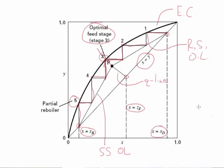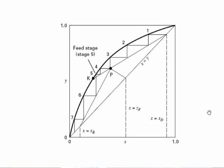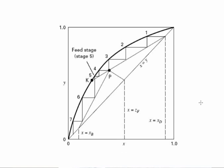This isn't the only way we could arrange that. It would be possible to imagine placing the feed stage elsewhere. In this diagram, we see the same McCabe-Thiele plot, but now the feed stage has been placed on stage five. The feed stage is still merely when we transition from one operating line to the other. Here we continue stepping along the rectifying section operating line until we get to stage five, where we've gone from the rectifying section operating line to the equilibrium curve and then down to the stripping section operating line — so again, that is the feed stage.